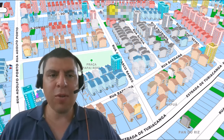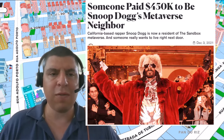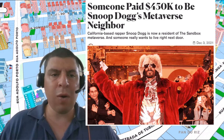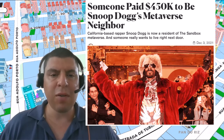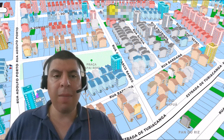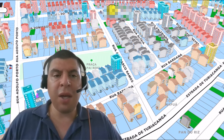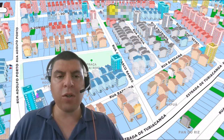I mentioned at the top of this video that someone had paid almost half a million dollars to be Snoop Dogg's virtual neighbor — and that's a pretty big deal. Just like in the real world, your neighbors are important, and the same thing is also true in the metaverse. The identity that you create for yourself — by means of the land that you own, the home that you define, the things that your virtual avatar wears — this is all an expression of yourself, or the virtual self that you create in the metaverse.